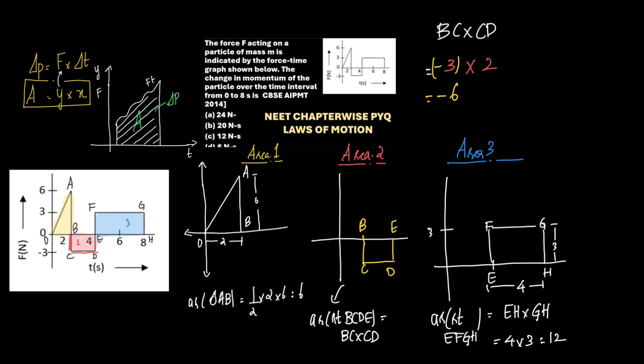If you add these three areas, you get 6 plus minus 6 plus 12, which equals 12. Now look at how tricky the options are. If you would have skipped this minus, the answer would look like 6 plus 6 plus 12, which equals 24, which is option A.